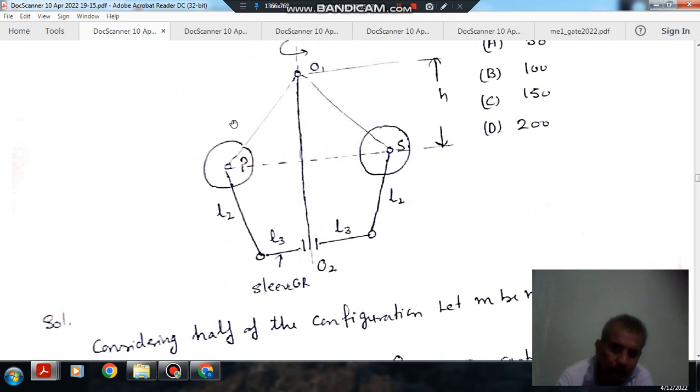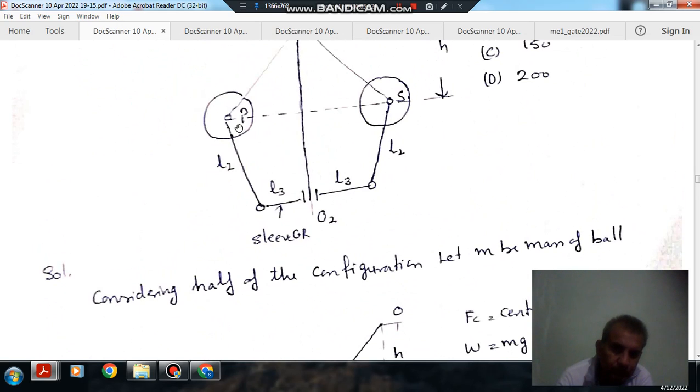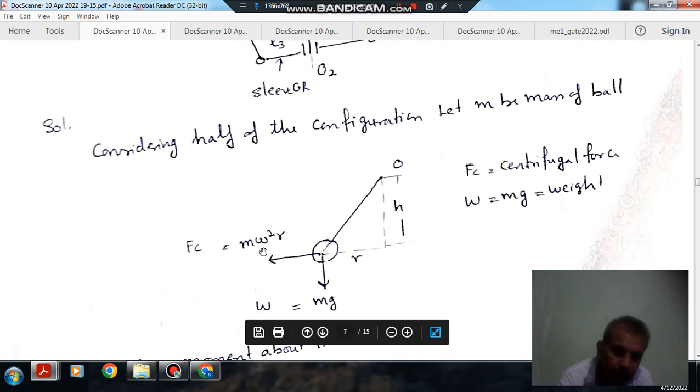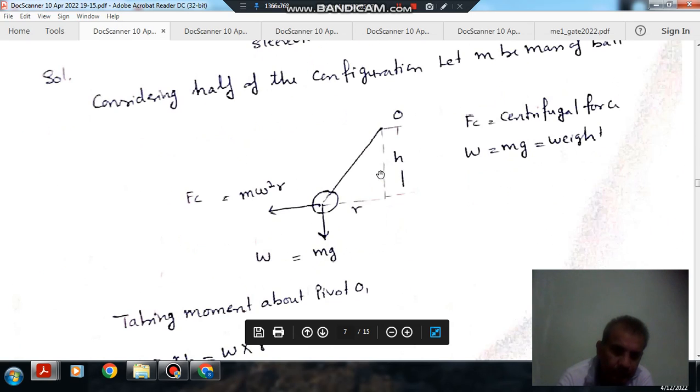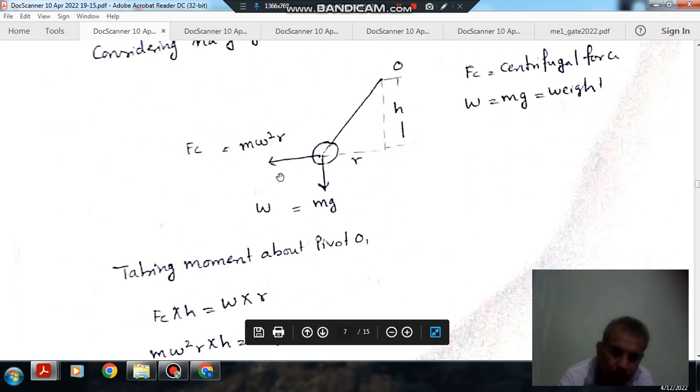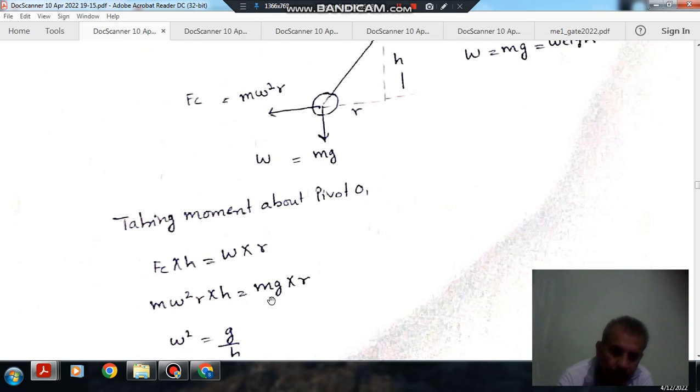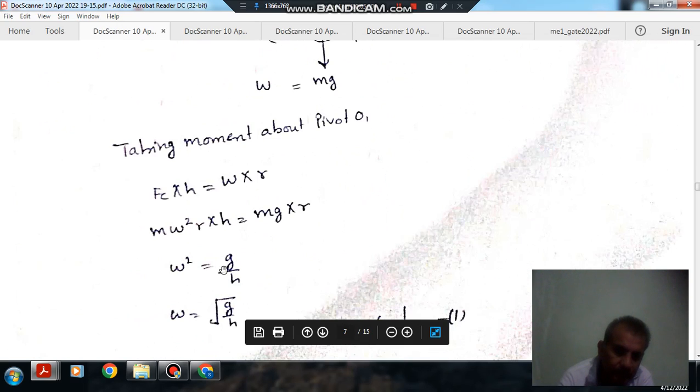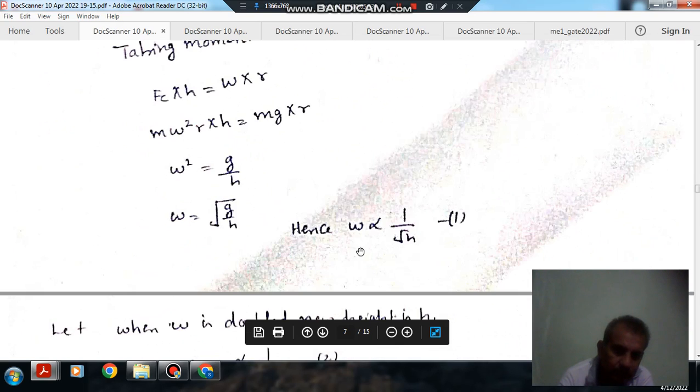So now this is your governor. I am considering half of the configuration. So the forces acting are, if it is rotating, then the centrifugal force will act and the weight of the ball will act. So centrifugal force is M omega squared R and weight is Mg. Taking the moment about this point, we will have F into H equals Mg into R.